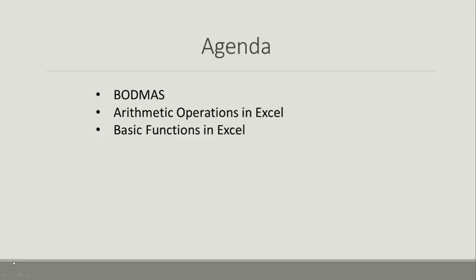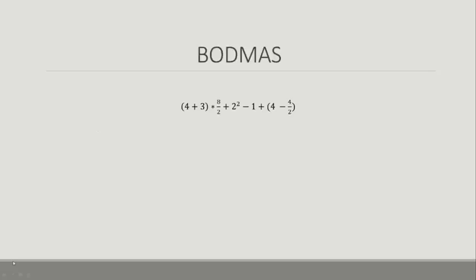Let's go through an example of this quickly before we jump into Excel. Say you have this expression: 4 plus 3 times 8 divided by 2, plus 2 squared, minus 1, plus 4 minus 4 half. The question is how should we go about solving this expression?